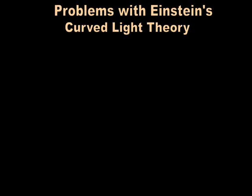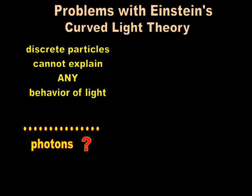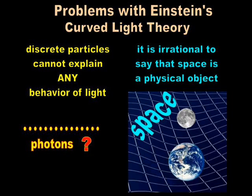The problem with Einstein's curved light theory is that it requires us to accept at face value two far-fetched assumptions. One, that light consists of discrete particles, an assumption that cannot justify any known behavior of light. The other, that space is a physical object, is simply irrational.